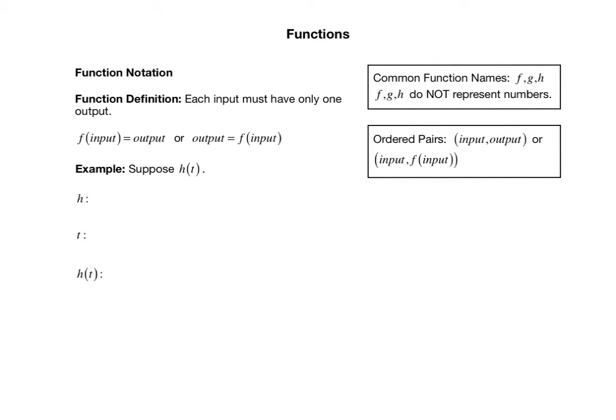So as we formally define function, we don't want that to happen. Our definition of function requires that for a relationship between two variable quantities to be considered a function, each input must have only one possible output. So 30 workouts can't give both $270 and $300 as outputs — it can only have one possible output. The way you read function notation is: f of the input equals the output.